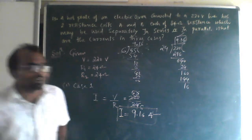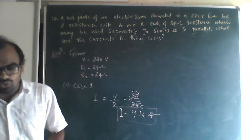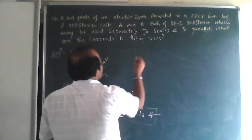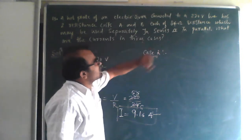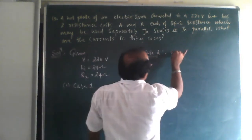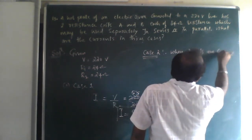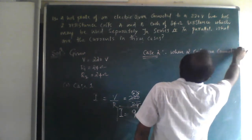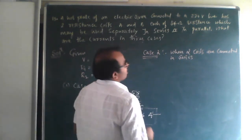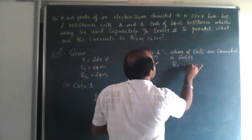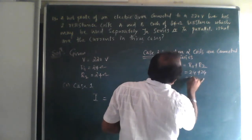Now moving to Case 2: when the two coils are connected in series. In series, the effective resistance R = R1 + R2 = 24 + 24 = 48 ohm.